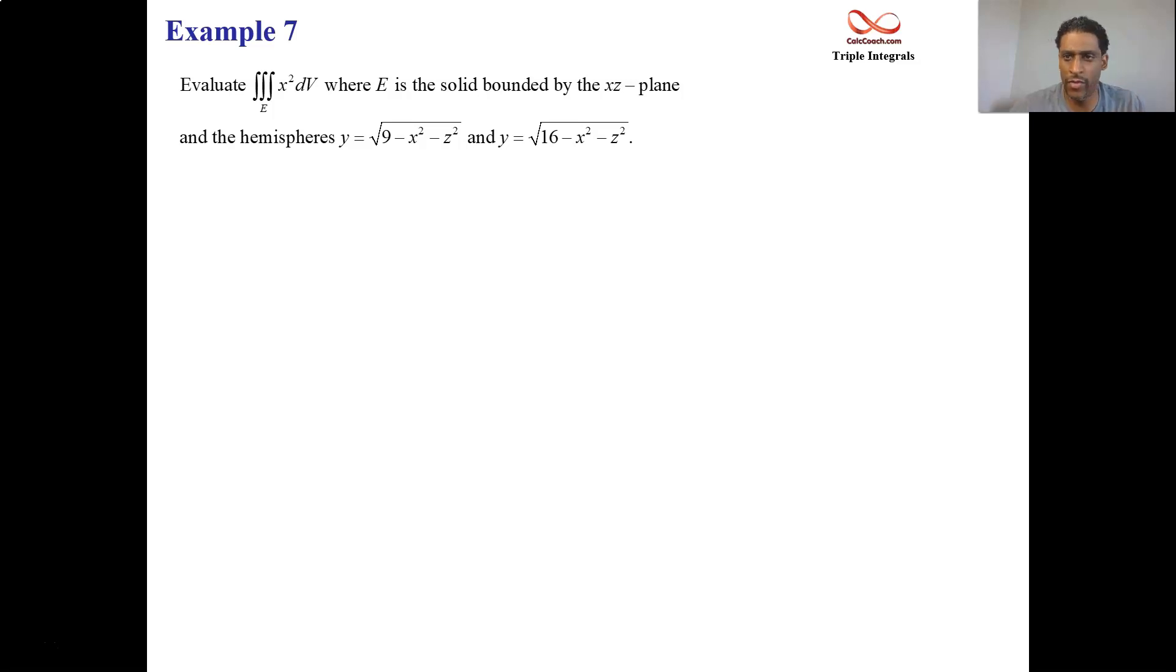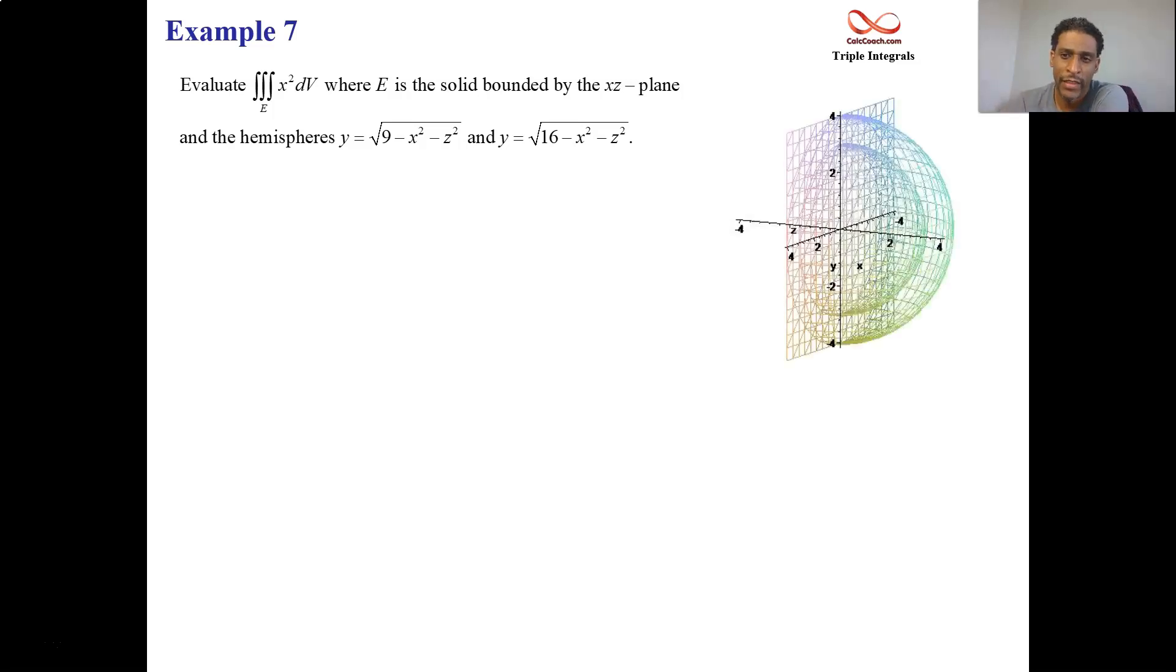So here's a good drawing of the shape. If y equals the square root of 9 minus x squared minus z squared, square both sides, move the negative guys over, it's rho equals 3, because x squared plus y squared plus z squared is rho squared. Do the same thing with the other, you'll get rho equals 4. So rho's going to go between 3 and 4. We're talking about the volume that's in between these.